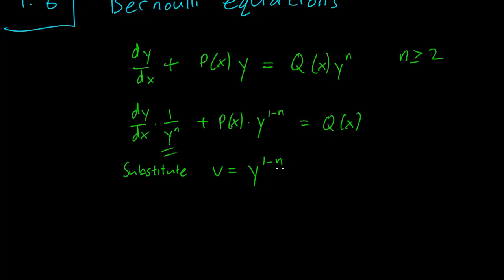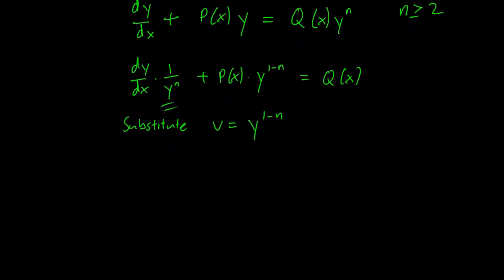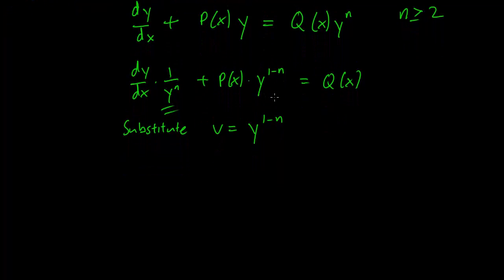So we just take the v equals y to the 1 minus n term and we can see why this makes this part of the problem easier. Let's hope it gets rid of the y raised to the nth power too.